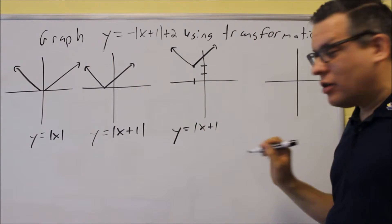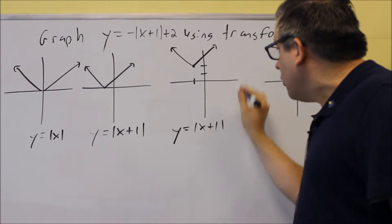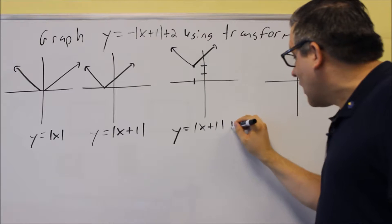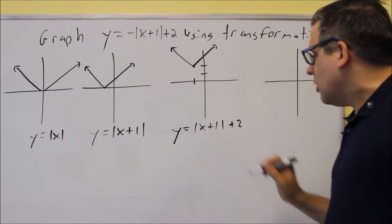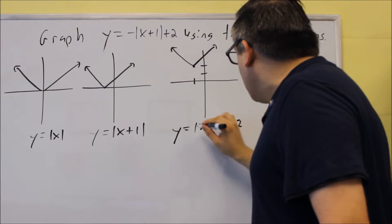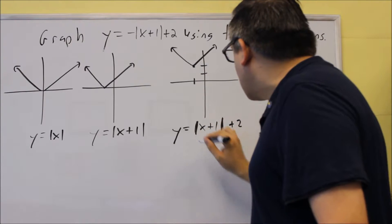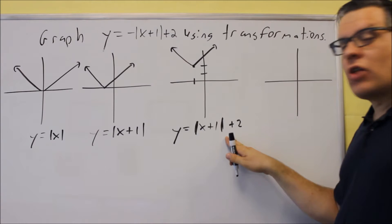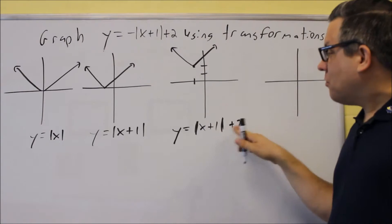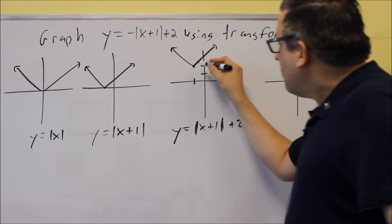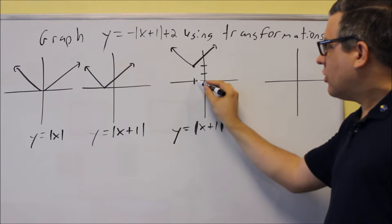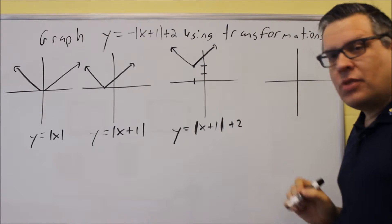That's taking into account two transformations: the inside one moved the graph to the left, and the outside one moved it up 2 units. So we did absolute value of x plus 1, plus 2, and that moved it to this new position — 1 to the left and up 2.